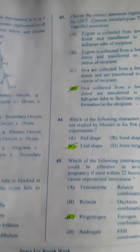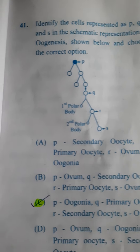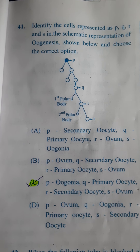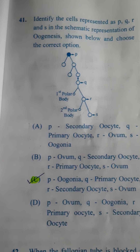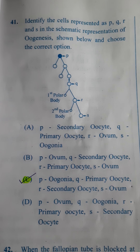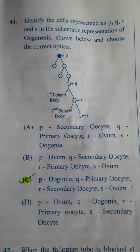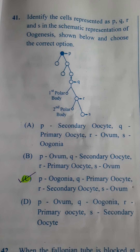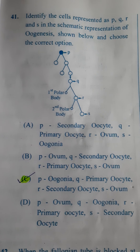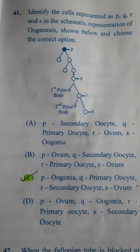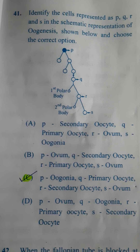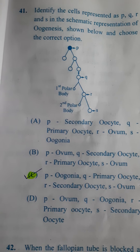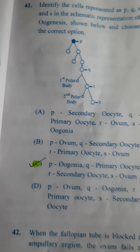Next: Identify the cells represented as P, Q, R, and S in the schematic representation of oogenesis and choose the correct option. If you check the diagram, P refers to oogonia, Q refers to primary oocyte, R refers to secondary oocyte, and S refers to ovum. So the answer here is C.